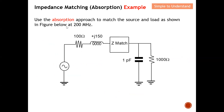We use the absorption approach to match the source to the load as shown in the figure, at 200 MHz. The key objective of impedance matching is that when looking into the matching network from the source, the input impedance must be the complex conjugate of the source. So the input impedance should be 100 minus j150. This means the matching network must present 100 minus j150, which is complex conjugate to the source impedance.